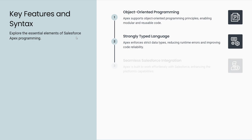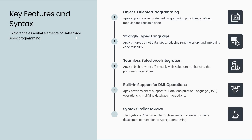For key features and syntax: Apex supports object-oriented programming principles, enabling modular and reusable code. It is a strongly typed language, reducing runtime errors and improving code reliability. It provides seamless Salesforce integration, enhancing the platform's capabilities, and has built-in support for DML operations, simplifying database interactions. Its syntax is similar to Java, making it easier for Java developers to transition to Apex programming.